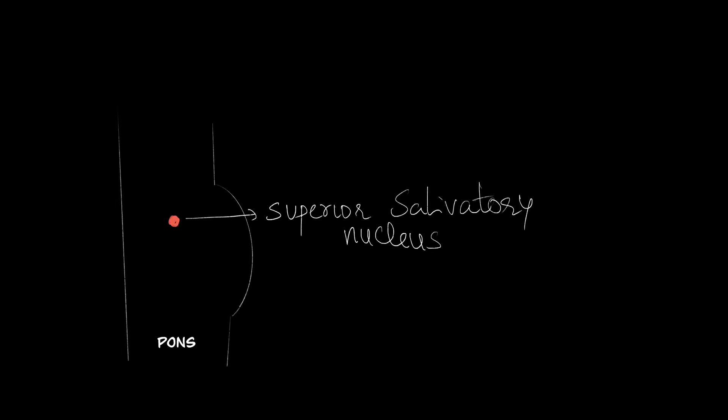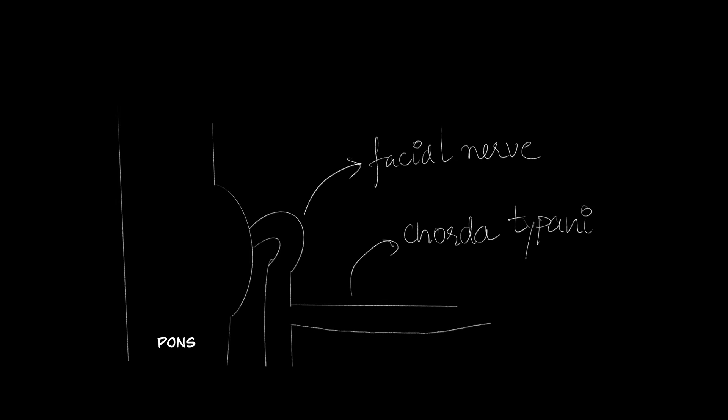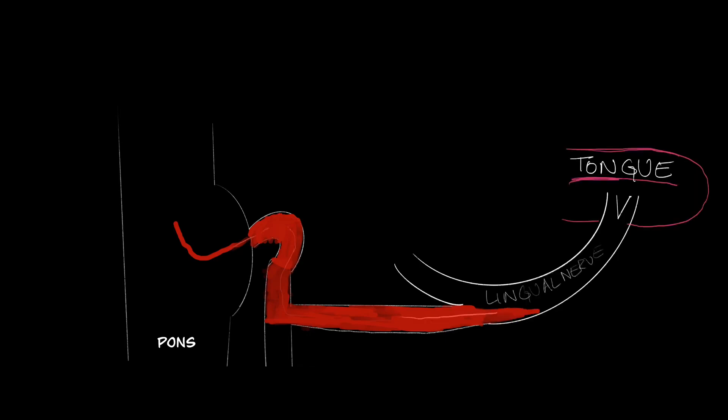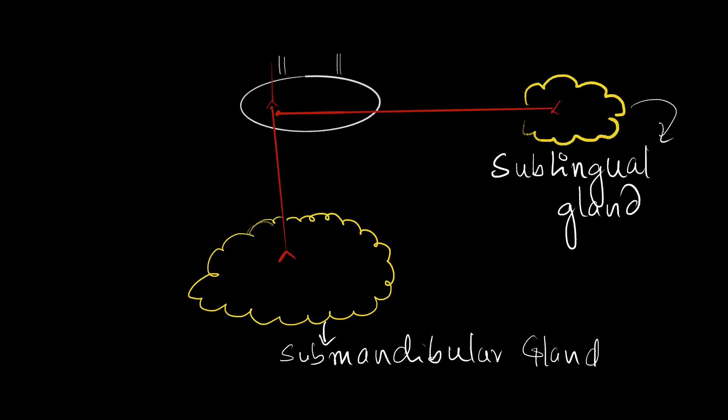Now let's talk about the parasympathetic route. The pre-ganglionic secretomotor fibers take origin from the superior salivatory nucleus in the pons. They then exit the pons via the facial nerve and enter the chorda tympani branch of the facial nerve. On entering the submandibular region, the fibers take structural support of the lingual nerve to finally relay in the submandibular ganglion via the proximal twig. The post-ganglionic fibers give parasympathetic supply to the submandibular and sublingual glands.